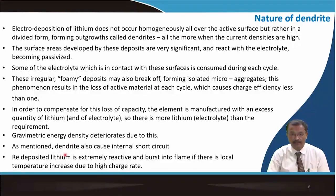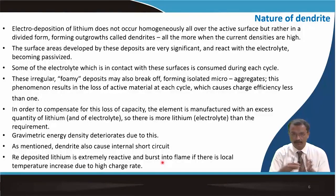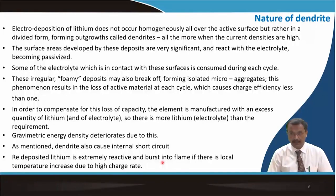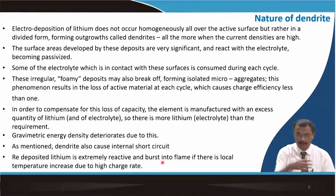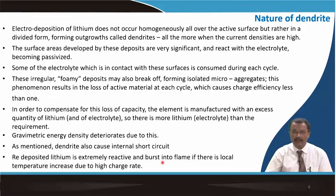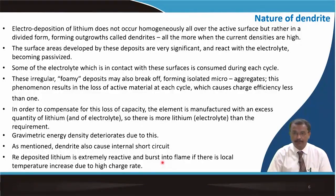Dendrites can cause internal short circuits, and redeposited lithium is extremely reactive. The foamy deposits on the lithium surface can lead to internal short circuits that burst into flame, because organic electrolytes are flammable. Particularly at high charge rates, when deposition is discrete and foamy, dendrites form internal short circuits and the electrolyte catches fire — all of which are very detrimental to this type of battery.